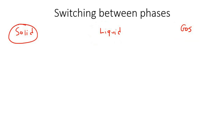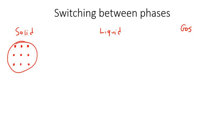With solids, the particles are the closest together and they're nicely organized. With liquids, the particles are a little bit further apart and they're not in a nice organized structure — they're sort of all over the place.